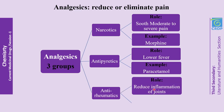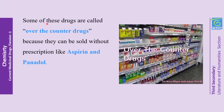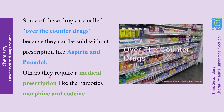Third, anti-rheumatics, which are used to reduce or eliminate inflammation of the joints, such as aspirin and Panadol. Some of these drugs are called over-the-counter drugs because they can be sold without a doctor's prescription, like aspirin and Panadol. On the other hand, many drugs require a medical prescription, like the narcotics morphine and codeine.